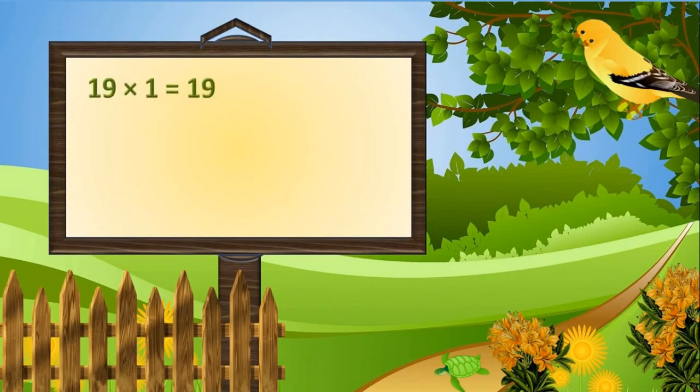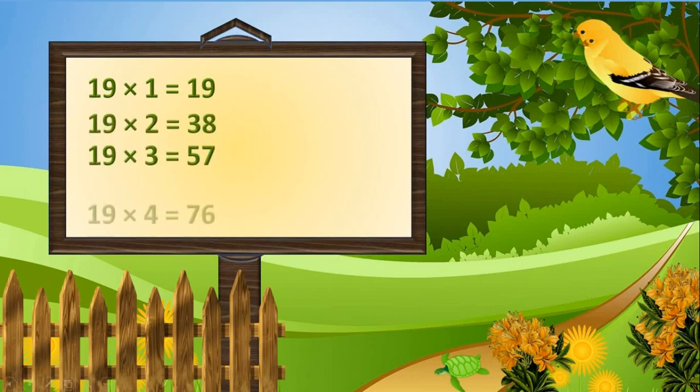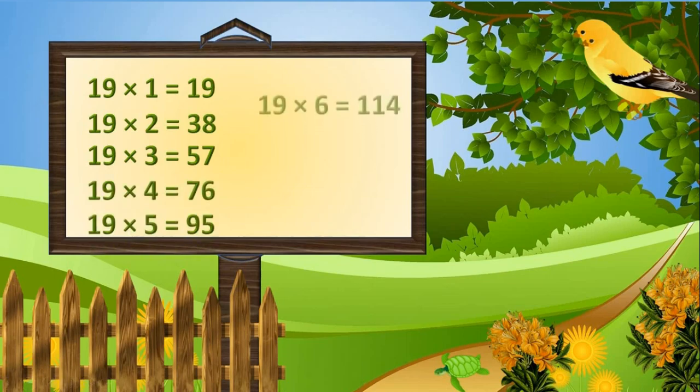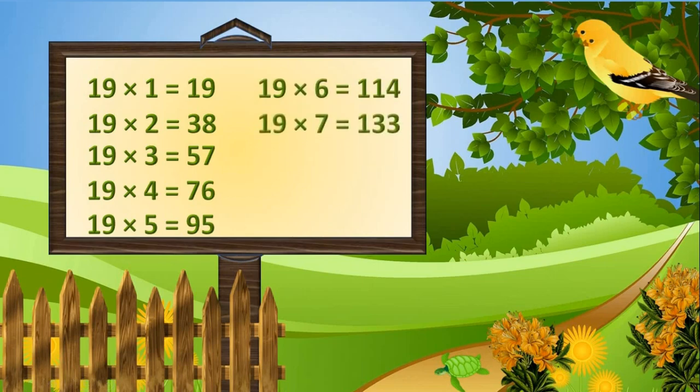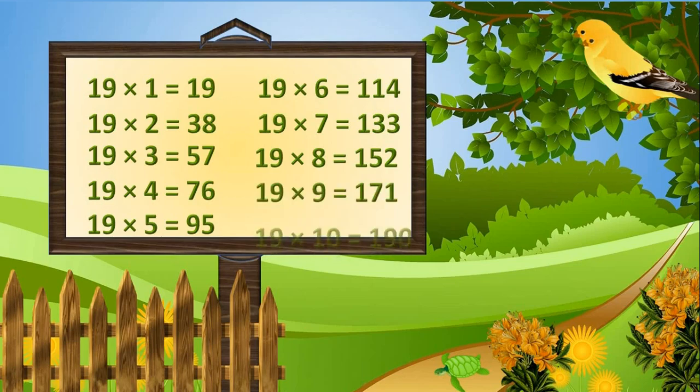19 times 1 is 19. 19 times 2 is 38. 19 times 3 is 57. 19 times 4 is 76. 19 times 5 is 95. 19 times 6 is 114. 19 times 7 is 133. 19 times 8 is 152. 19 times 9 is 171. 19 times 10 is 190.